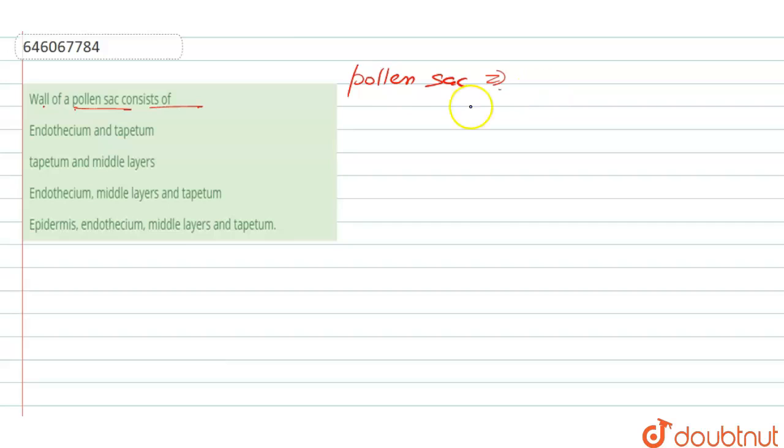Some of the layers are: first is the epidermis. Talking about this epidermis, it is the uni-layered and protective layer in nature.